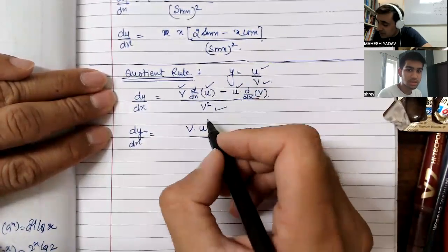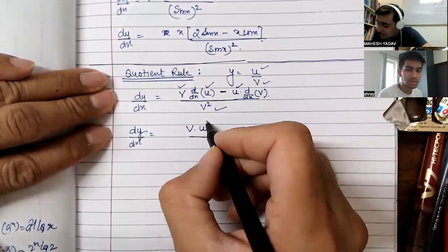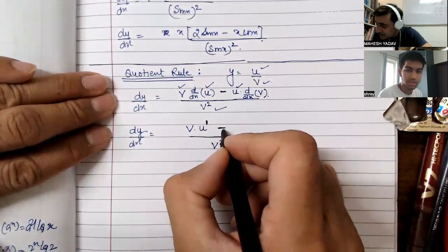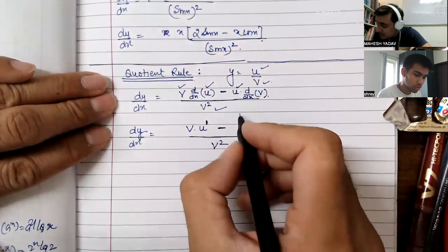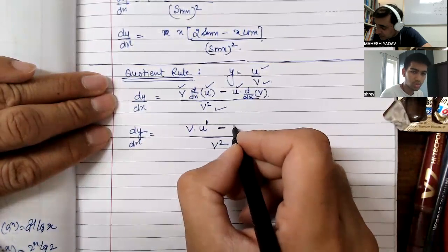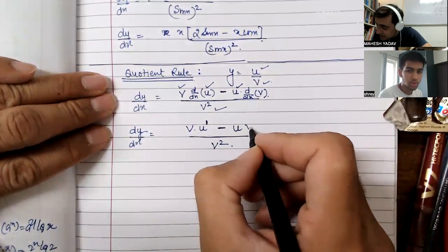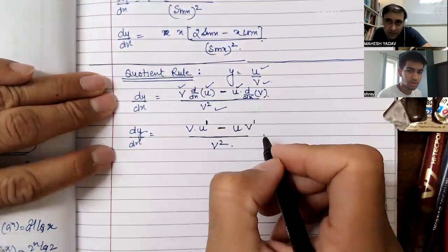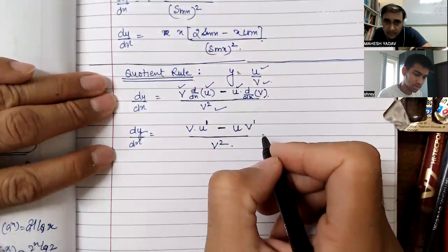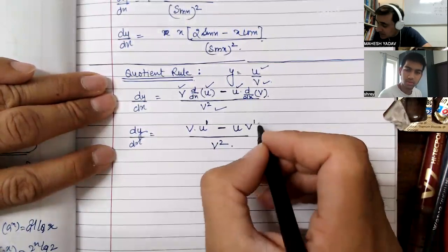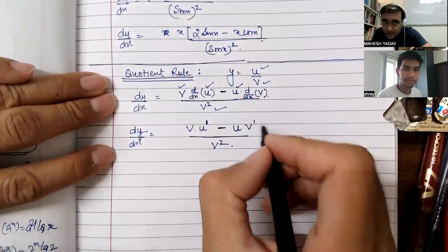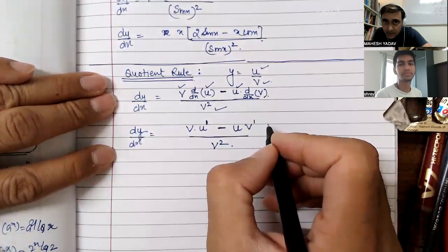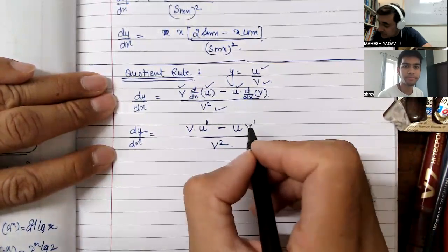U minus U — numerator as it is, U — multiplied by V dash, the derivative of the denominator. So the full formula is: dy/dx = (V·U' - U·V') / V².